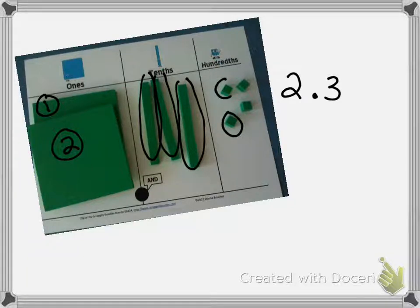And how many hundredths? One, two, three, four hundredths. So, this decimal place value model equals 2.34.